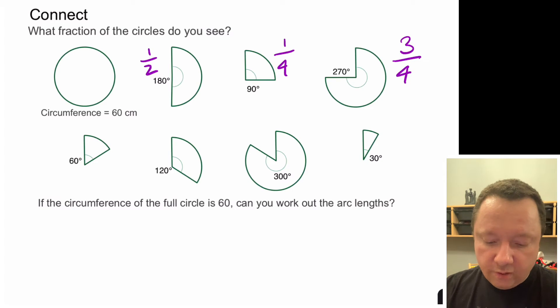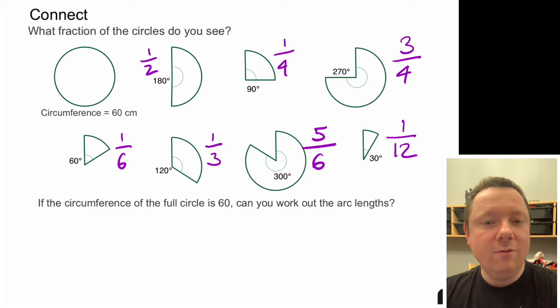This one is not as obvious what fraction of a circle that is but if you think 60 going into 360 you would get six so that must be a sixth of the circle. 120 is double 60 so that's two sixths which is a third. 300, five 60s make 300 so it must be five sixths. 30 degrees, that's going to be half of this one so it must be a twelfth because a half of a sixth is a twelfth, or 12 30s make 360.